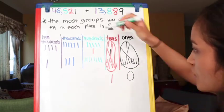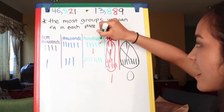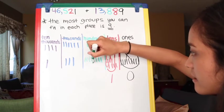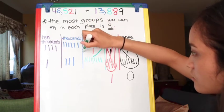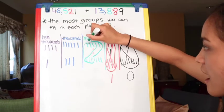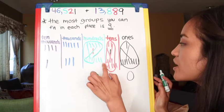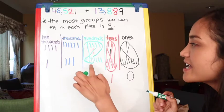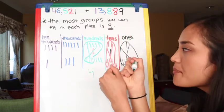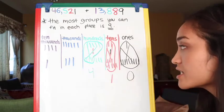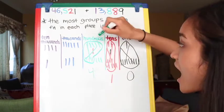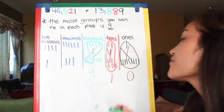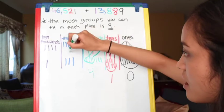Let's count up our hundreds — one, two, three, four, five, six, seven, eight, nine, ten. Cross that out and I'm left with one, two, three, four groups of hundreds. This group of ten I'm going to grab, bundle them up, and shimmy them on over to the thousands place, because ten groups of hundreds equals one group of a thousand.